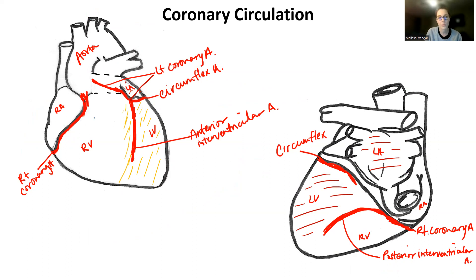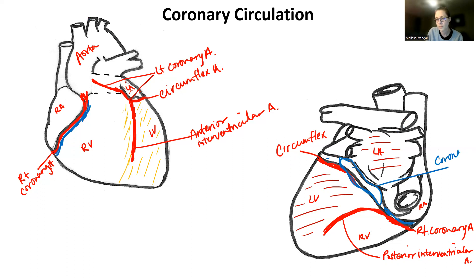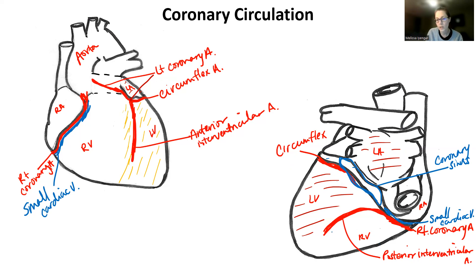How do we drain the right side? The right anterior side is going to be drained by a vein running parallel to the right coronary artery, and then it comes backwards and drains into a big blue blood vessel — the coronary sinus. The vein running parallel to the right coronary artery is called the small cardiac vein. Then you're going to have one that runs parallel to the posterior interventricular artery — that one is called the middle cardiac vein — and it also drains into the coronary sinus.